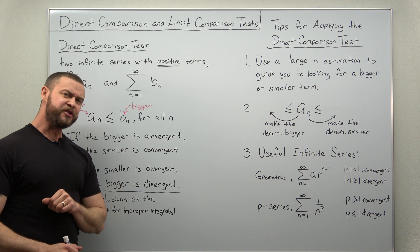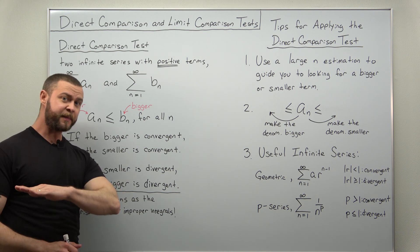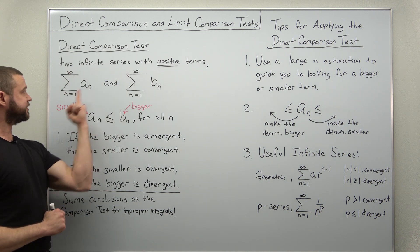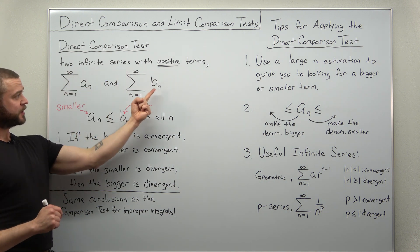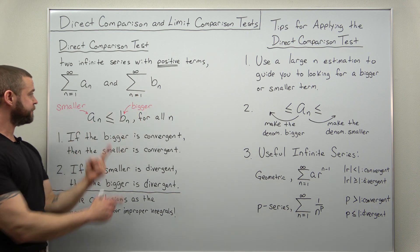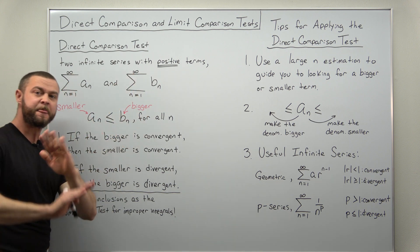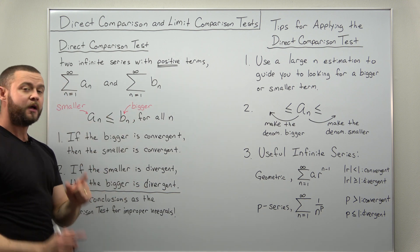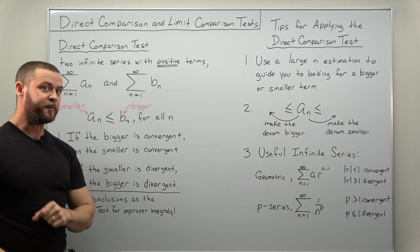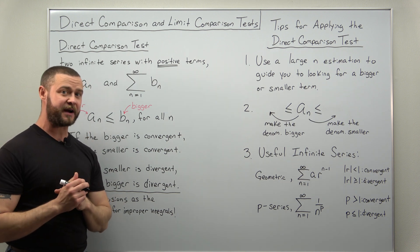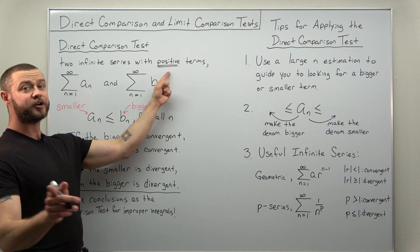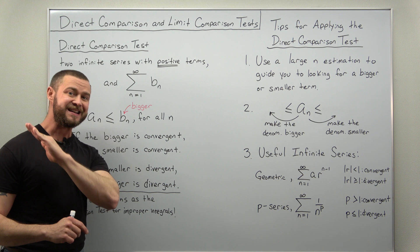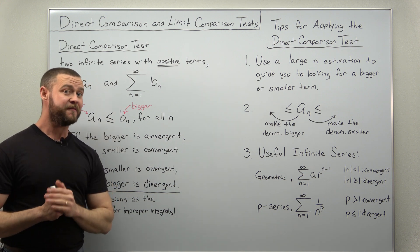The assumptions are pretty much the same for both the direct comparison and the limit comparison test. We're going to have two infinite series, one with the term a sub n, another with the term b sub n. Typically they go from one to infinity, though the starting index could be something else like zero or two. The important thing for both tests is that the terms of both infinite series are positive — no negatives for any values of the terms.